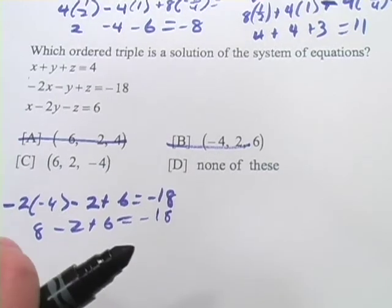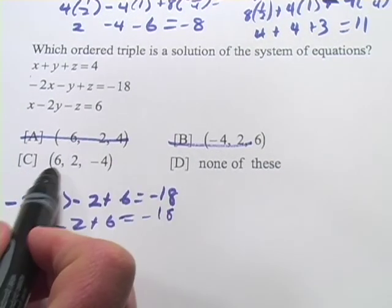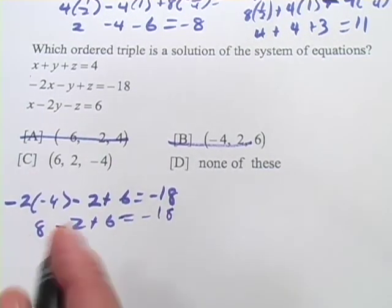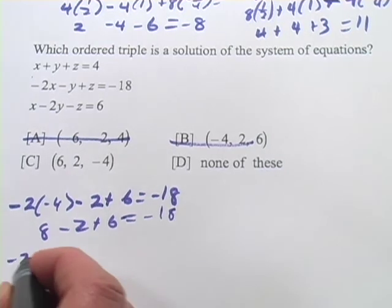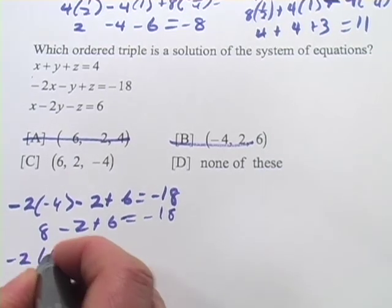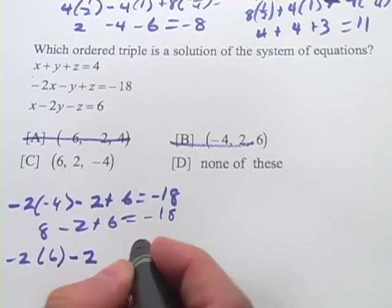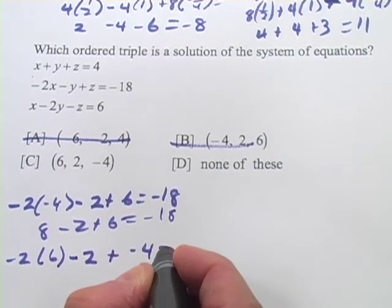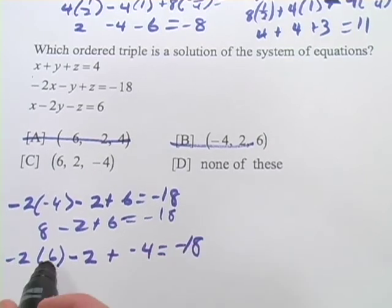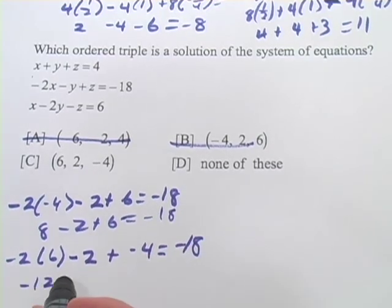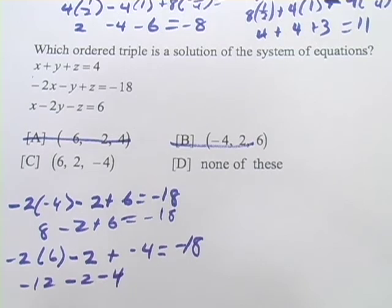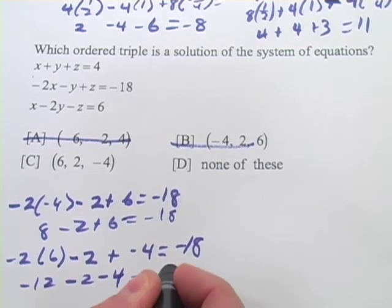Let's try C. It could be that it's none of these. We'll see. So let's put C into the second one. We have negative 2 times 6 minus 2 plus a negative 4 equals negative 18. So negative 2 times 6 is negative 12 minus 2 minus 4. And lo and behold, that is a negative 18.